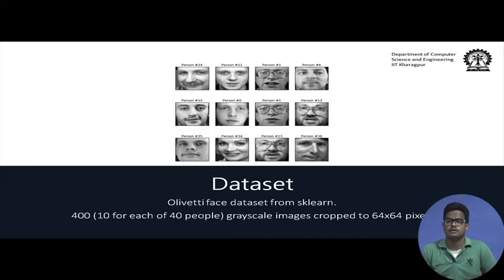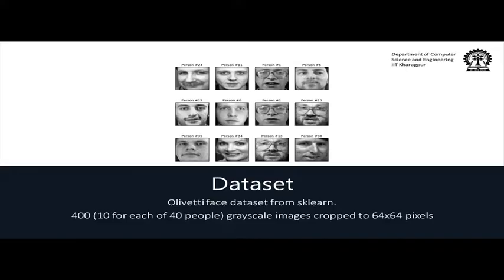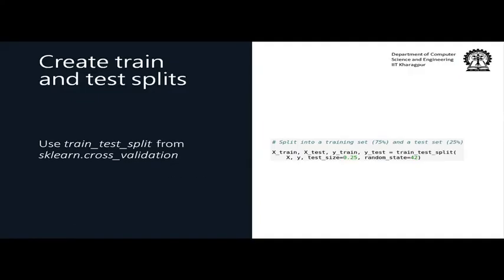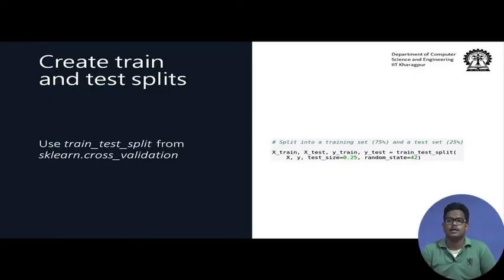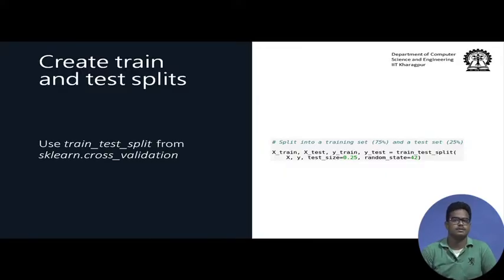The dataset we will use is the Olivetti face dataset from scikit-learn — grayscale images of faces of 40 people, with 10 faces each, giving 400 faces total. These faces have been cropped to 64×64 pixels. We then make a train/test split: 75 percent training data and 25 percent test data, using the train_test_split function from sklearn.cross_validation.